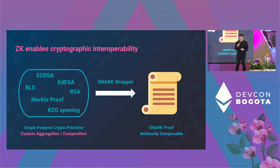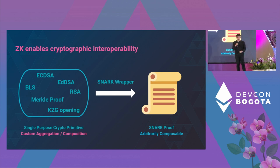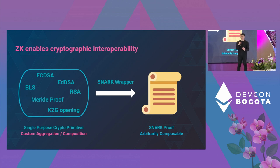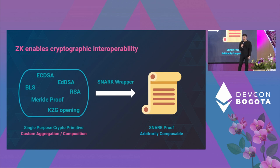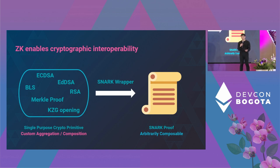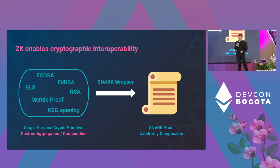Another capability that succinct ZK proofs bring is cryptographic interoperability. ZK allows you to take anything from the grab bag of cryptographic primitives and wrap it in a uniform format — namely a ZK-SNARK. While each of these primitives is useful for a different thing, they are designed in a somewhat single-purpose way, making it difficult to aggregate or compose them. ZK provides an interoperability layer that turns all of these into a SNARK proof that is arbitrarily composable using recursion.